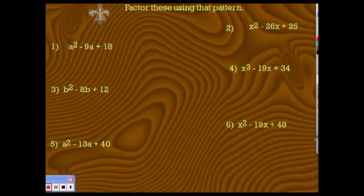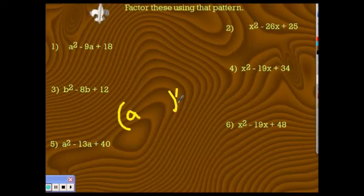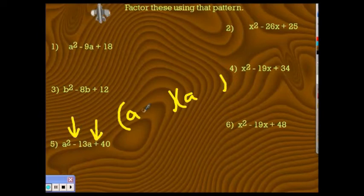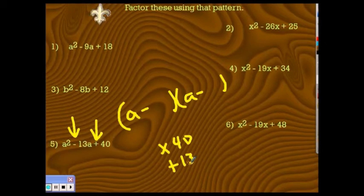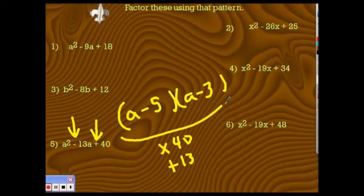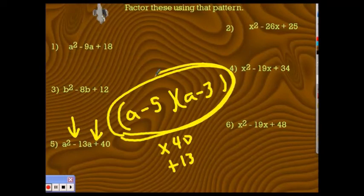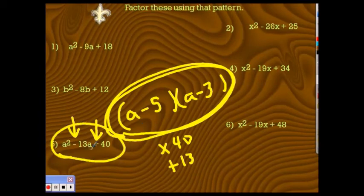Moving on to number 5. The plus sign tells me signs are the same — same minus sign. I'm looking for two numbers that multiply together to give me 40 and add up to 13. Those numbers are 5 and 8. By the way, if you want to check your answer, take the factored form, multiply it together by FOIL or the distributive property, and see if you get the original trinomial. If you did, then you did it right.